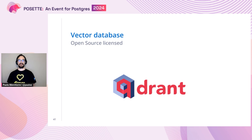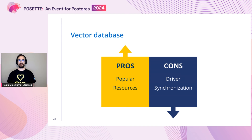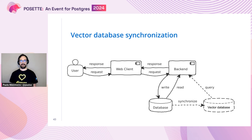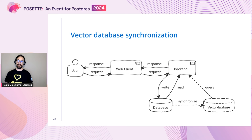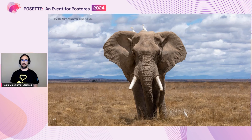To store all these vectors, you usually use a vector database. Qdrant is very well known and is open source. It has pros and cons — it's very popular with a lot of resources and examples online, but on the cons side you'll require a driver to use it and there can be synchronization issues. This is a representation of user interaction in a web project: when a user makes a request, you interact with the vector database and then go to the relational database to get the actual data. It's possible that in some cases the two databases are not synchronized.